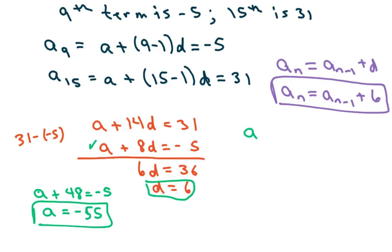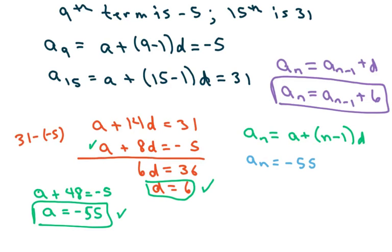So I got my recursive formula, and now I'm going to write a formula for the nth term. So a sub n equals a plus n minus 1 times d. I'm just going to plug in my 6 and my negative 55. So a sub n equals negative 55 plus n minus 1 times 6.